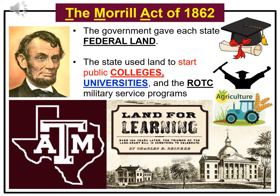The Morrill Act of 1862. Again, going back when Abraham Lincoln was still president, he worked with Congress and they created this program called the Morrill Act of 1862. It's all about education. The federal government gave federal land to different states, and the states could use the land to start public colleges and universities. The first institutions that were built were for agriculture and mechanical arts, such as Texas A&M. These schools also offered an opportunity for African Americans to get educated through historically black colleges and universities.